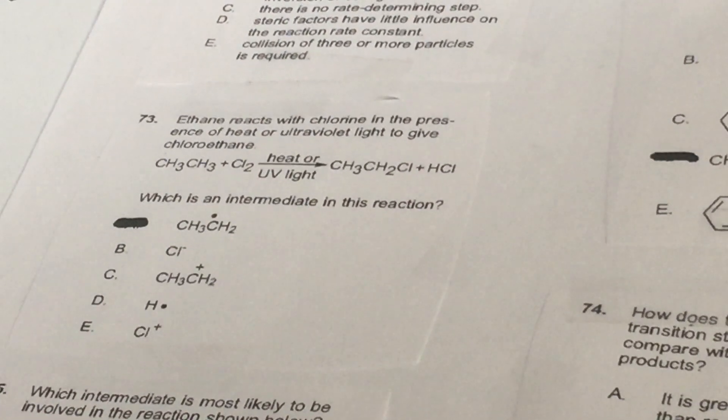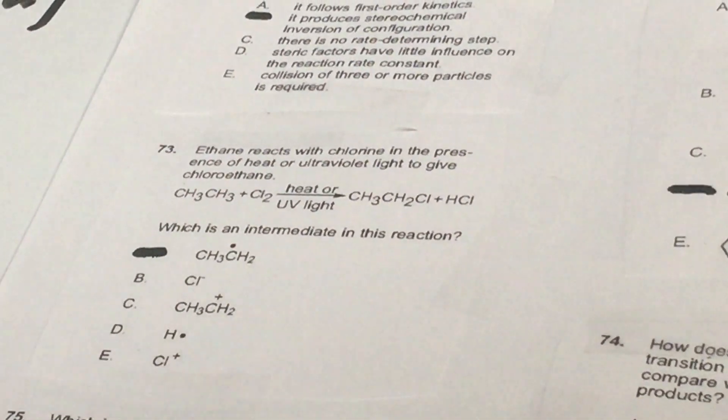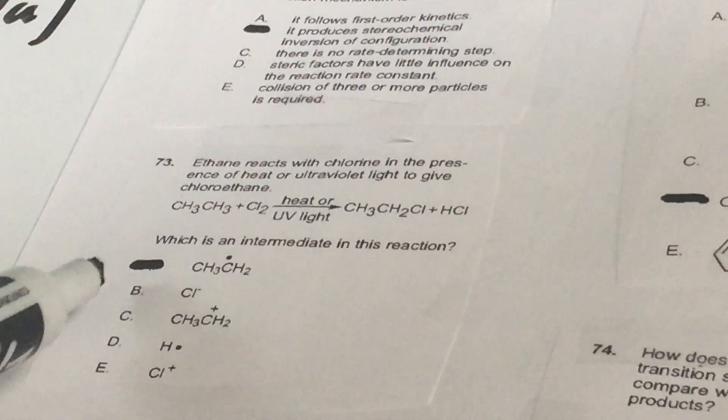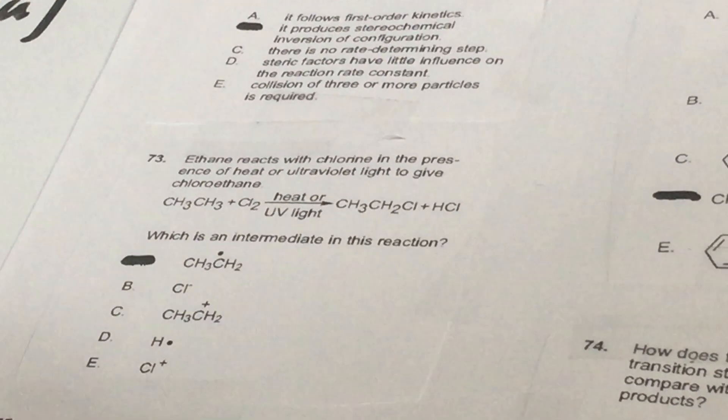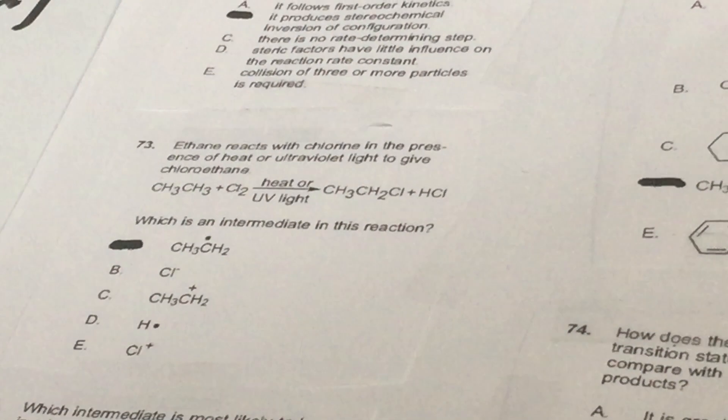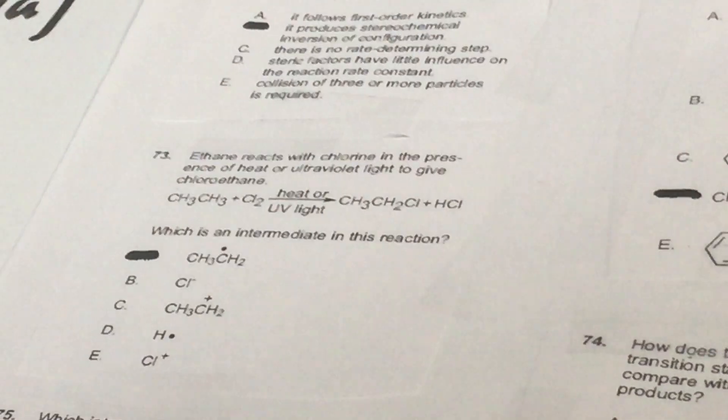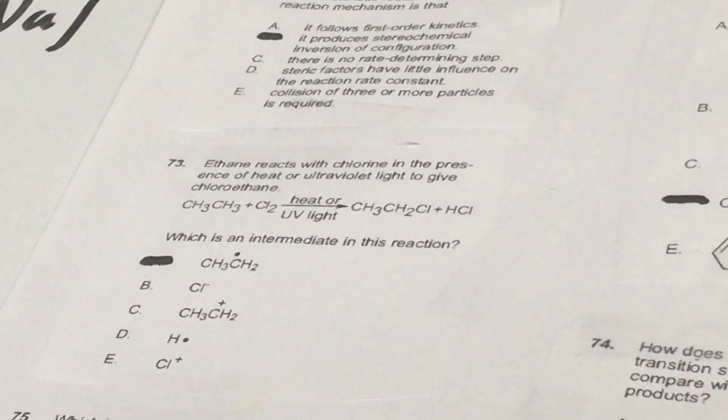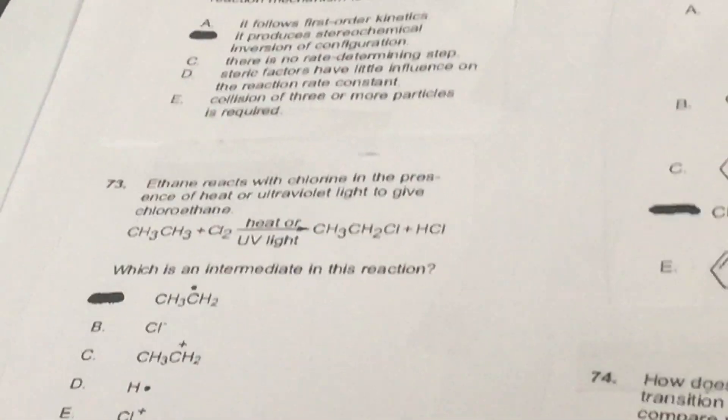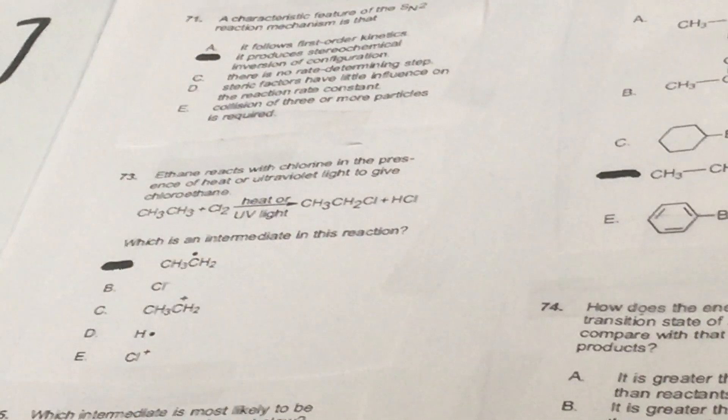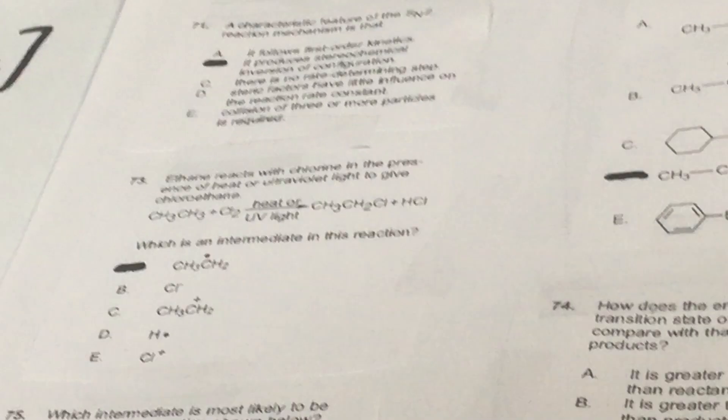73. Ethane reacts with chlorine in the presence of heat or ultraviolet light to give this reaction, which is an intermediate. I'm going to show you a real easy way to do it. Whenever you see heat or light, I want you to think radical. A radical, therefore, you could eliminate B, which is an anion, C is a carbocation, and E is another cation. So that's wrong. Now, you either have radical A or radical D. I want you to never forget something. If you ever see H dot, I want you to run for the hills. It's very unstable. It's very unlikely for you to come across this in organic chemistry. Very high energy. So by default, without having to do any mechanism, choose the radical that's got the electron on the carbon atom. And we keep that simple.